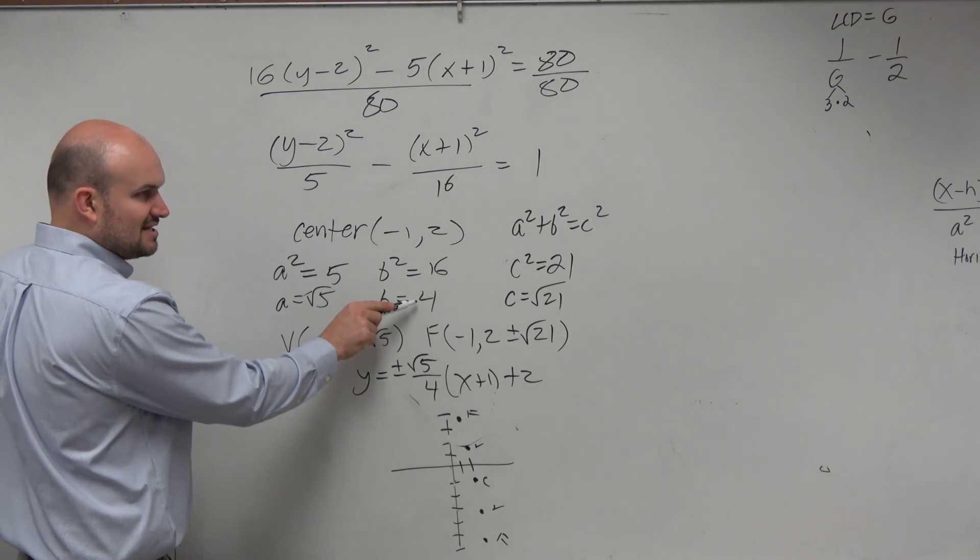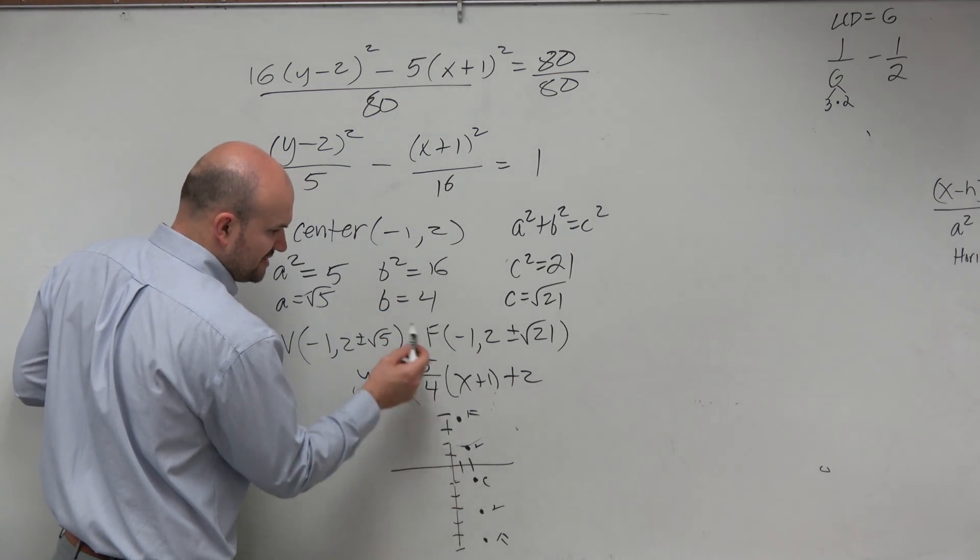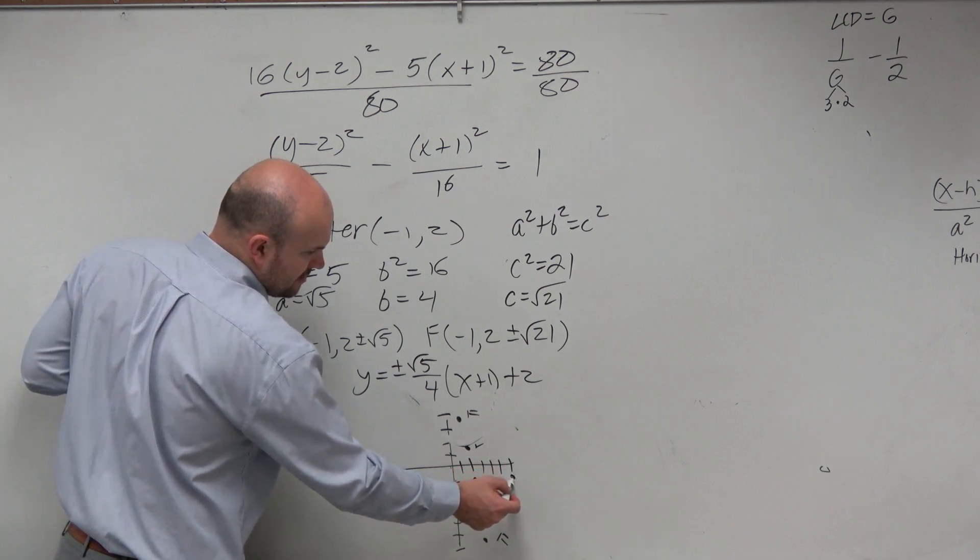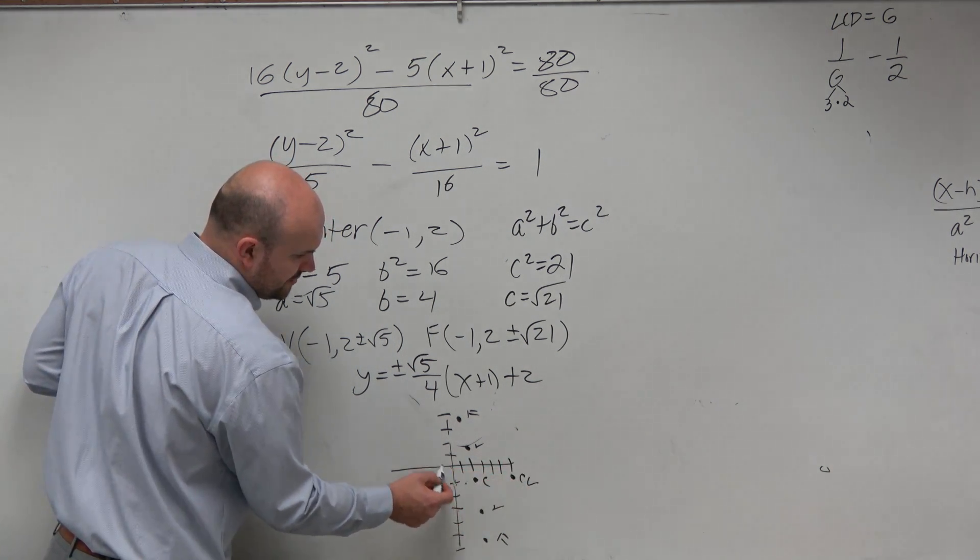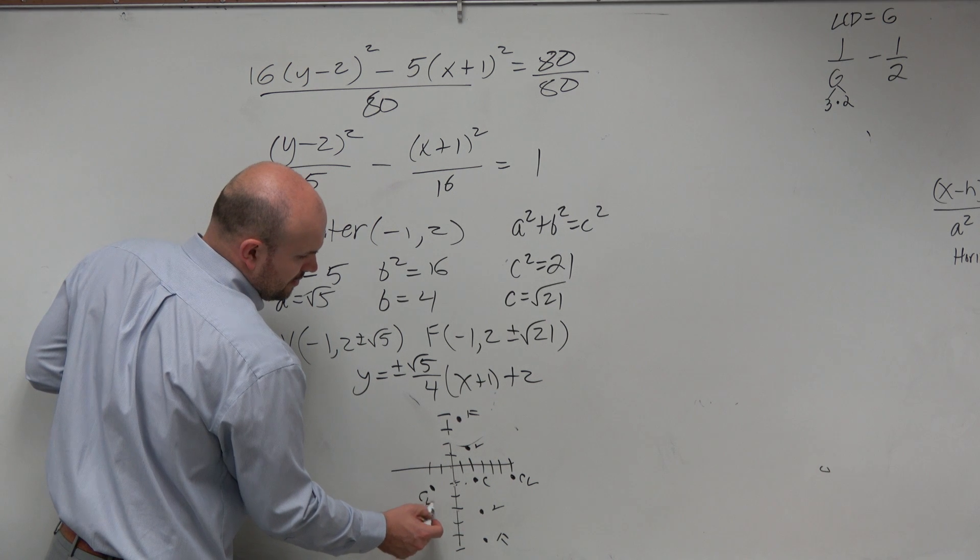So my co-vertices, that's the easiest one I have so far. That's just a distance of 4. So 1, 2, 3, 4, co-vertice, 1, 2, 3, 4, co-vertice.